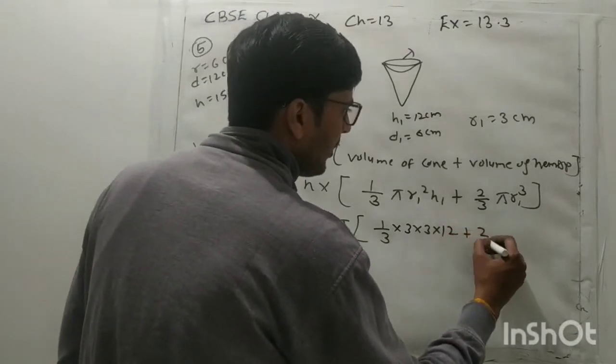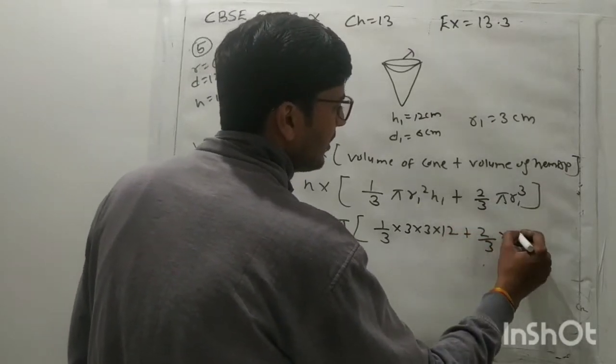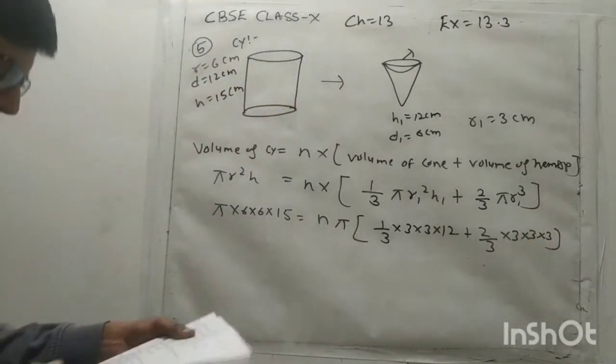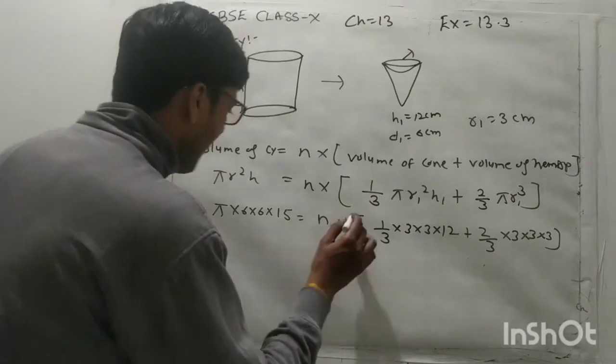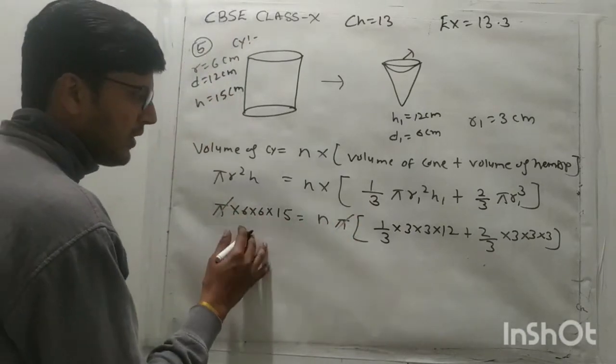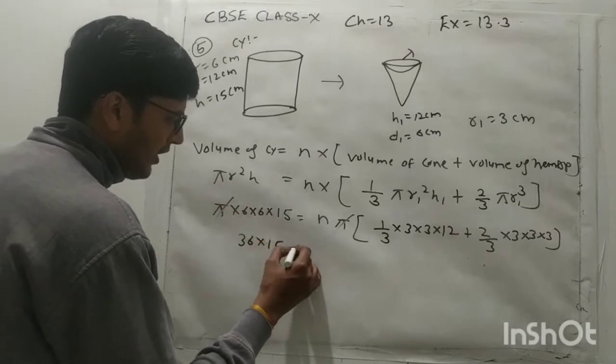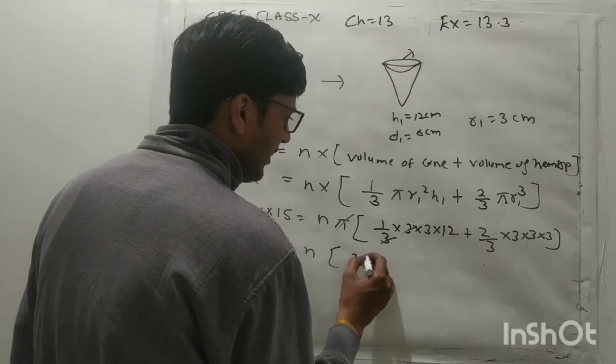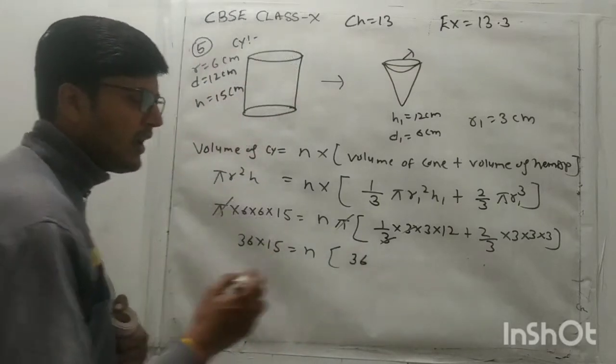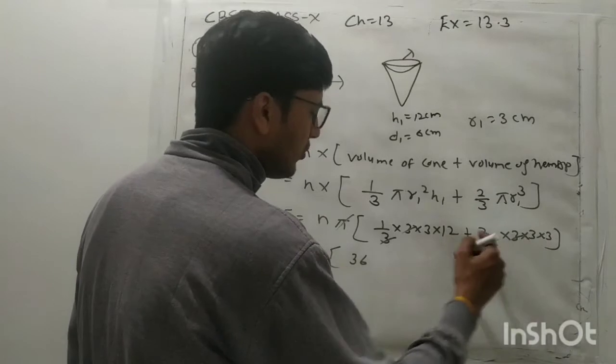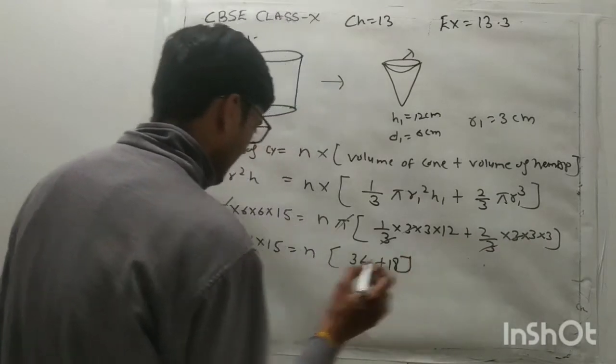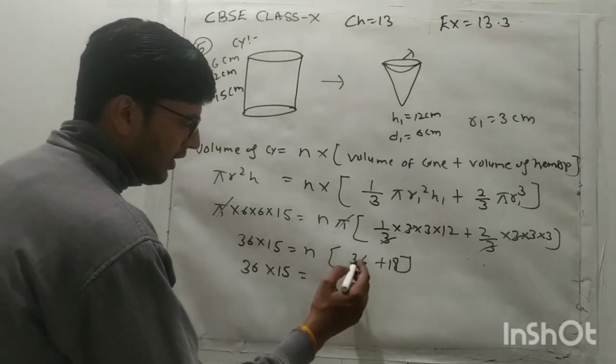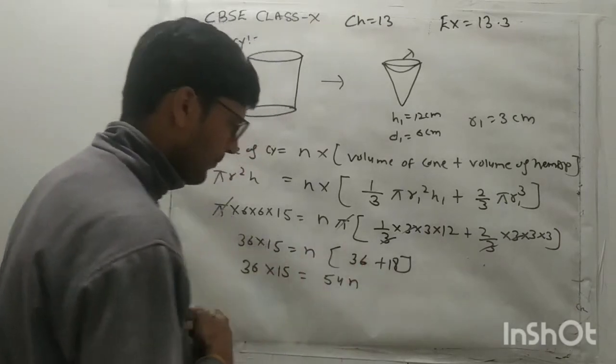So simply aap solve karenge. It is pi as it is and value of r is 6 into 6 and h is 15, equal this is our n number of cones. In dono mein common hai aapka kitna, pi. So remaining is 1/3 of r1 square. So r1 square is 3 into 3 or h kitna hai 12, plus 2 upon 3, r1 cube it means 3 into 3 into 3. Diameter aapko given hai to radius kitna hoga iska bhi 3.